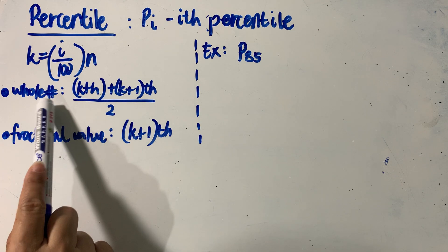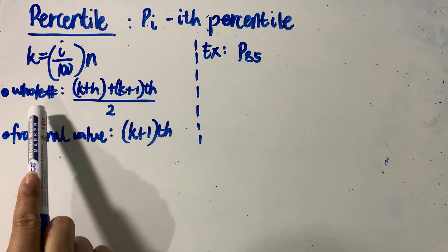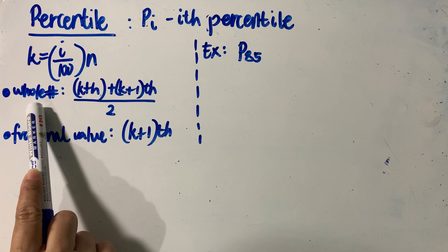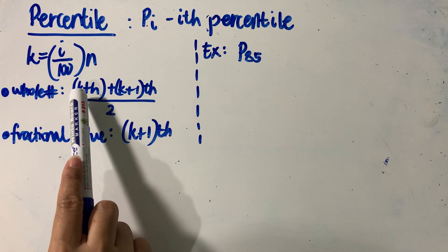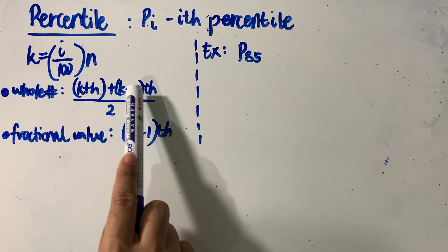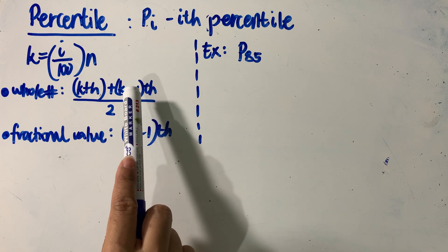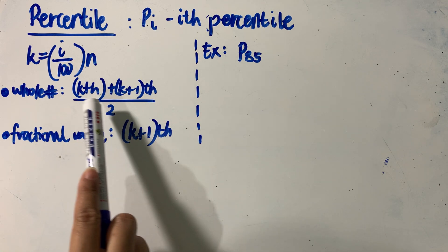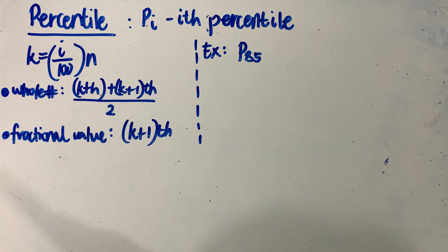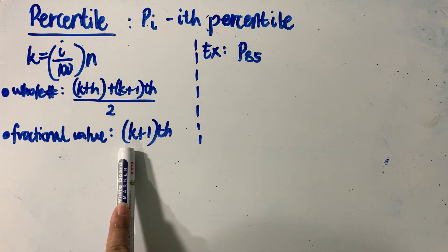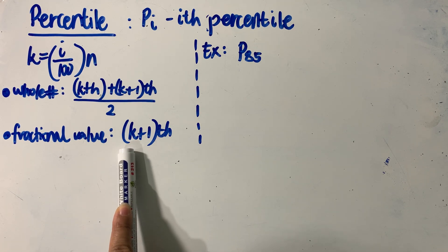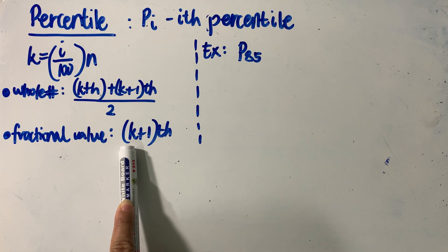K may either be a whole number or a fractional value. When K is a whole number, we locate the Kth observation and the K plus 1 observation — the next value after our Kth value — then take their sum and divide by 2. However, if K is a fractional value, we round it up to get the K plus 1 data value in our distribution.